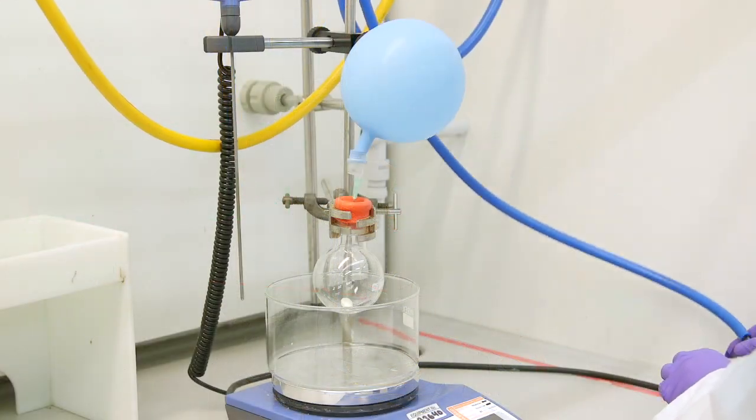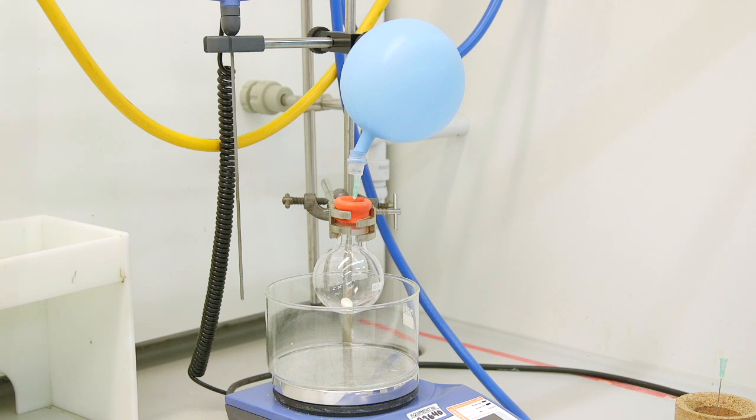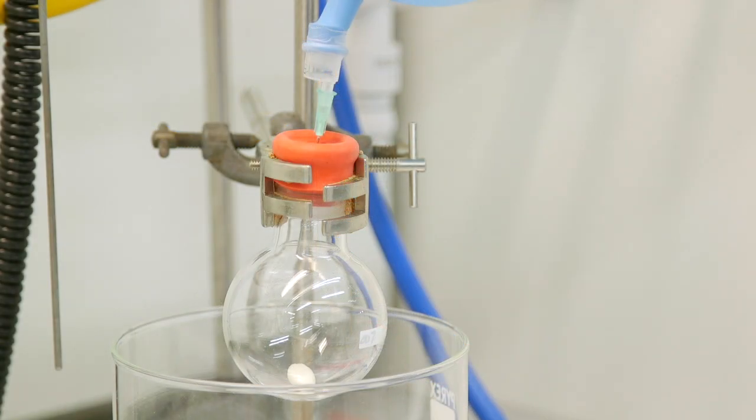We can now say our flask is under an inert atmosphere. To add reagents and solvent to your flask, we traditionally do this using a needle and syringe. This is done so not to expose the atmosphere inside the flask to air.